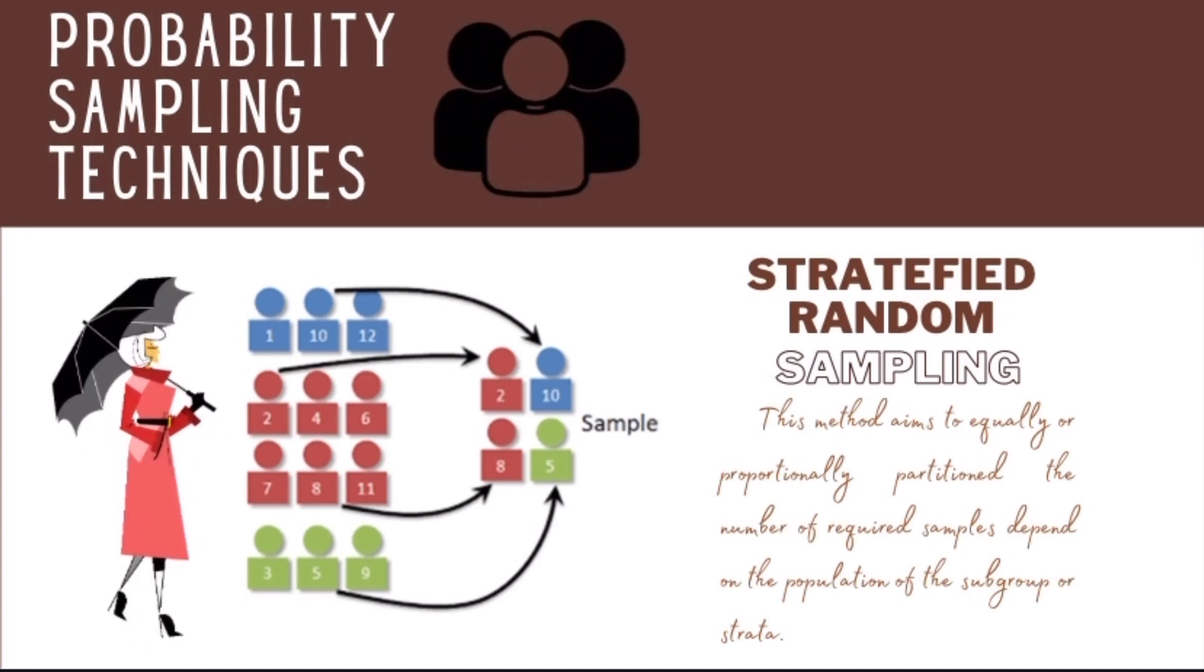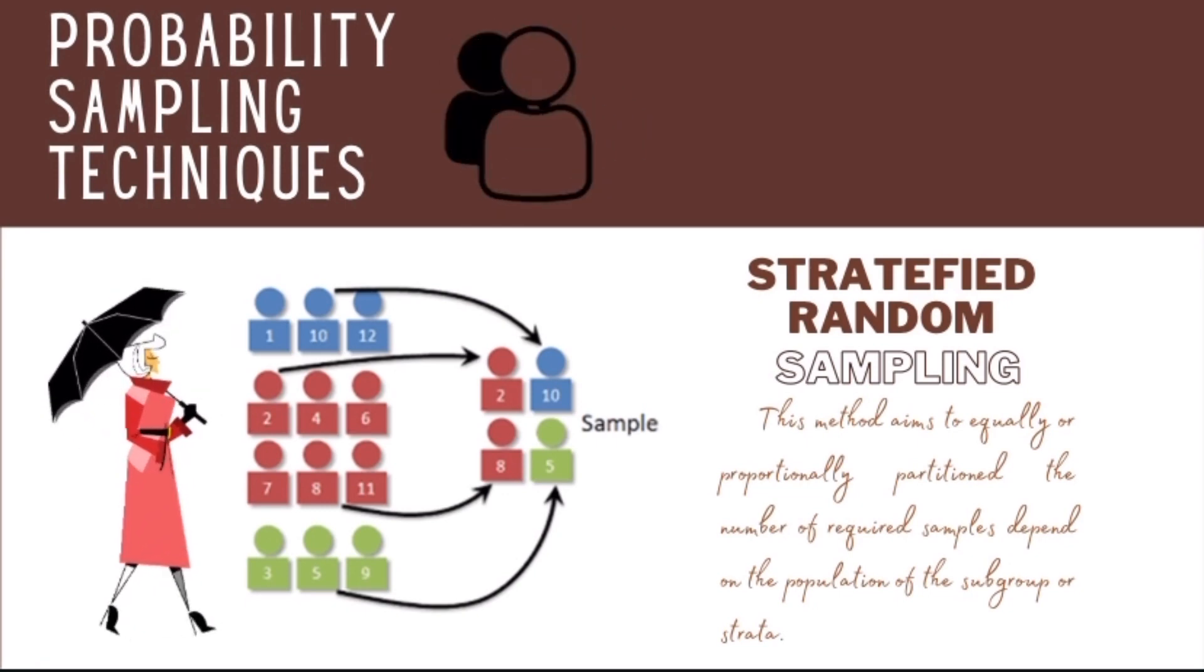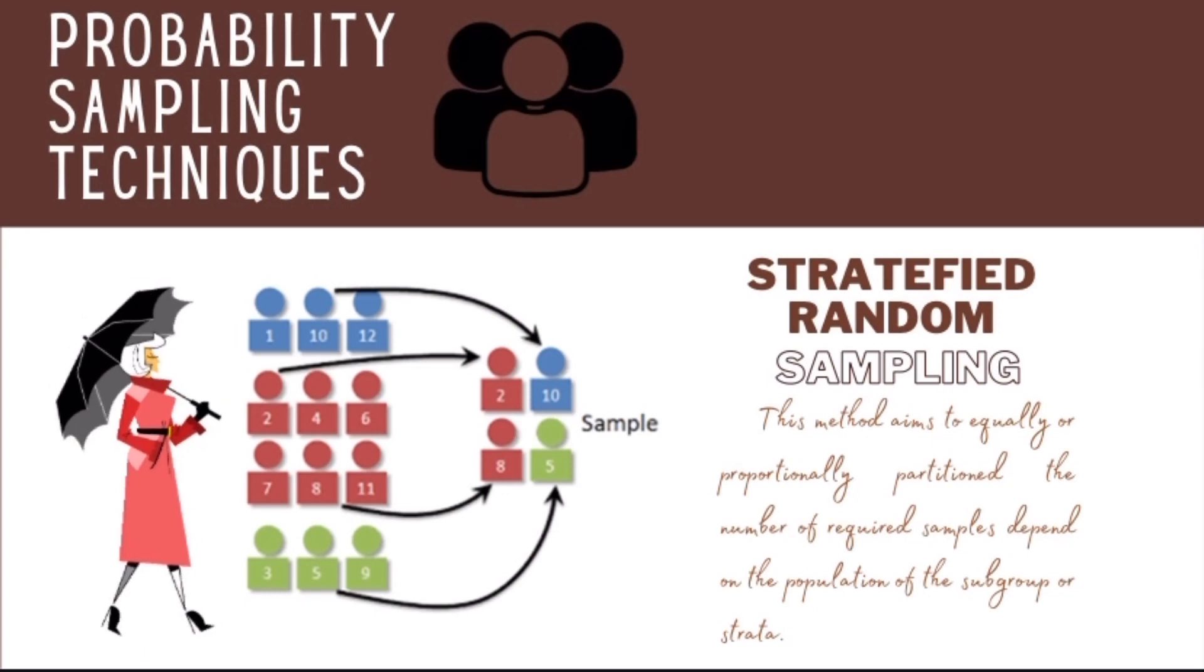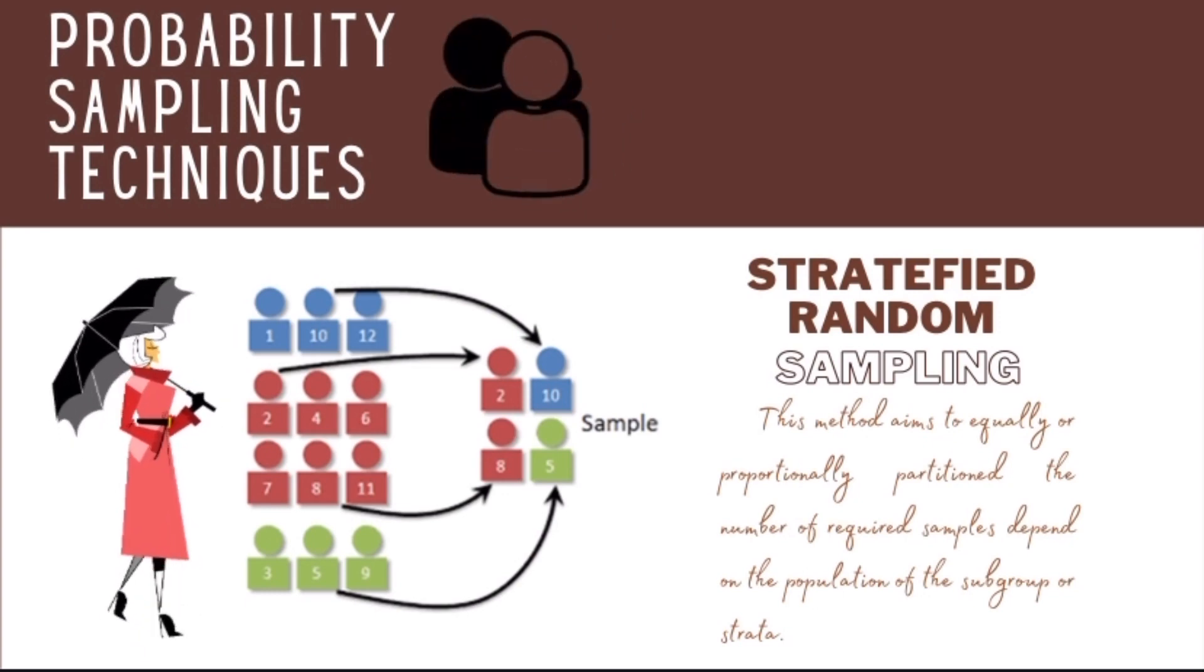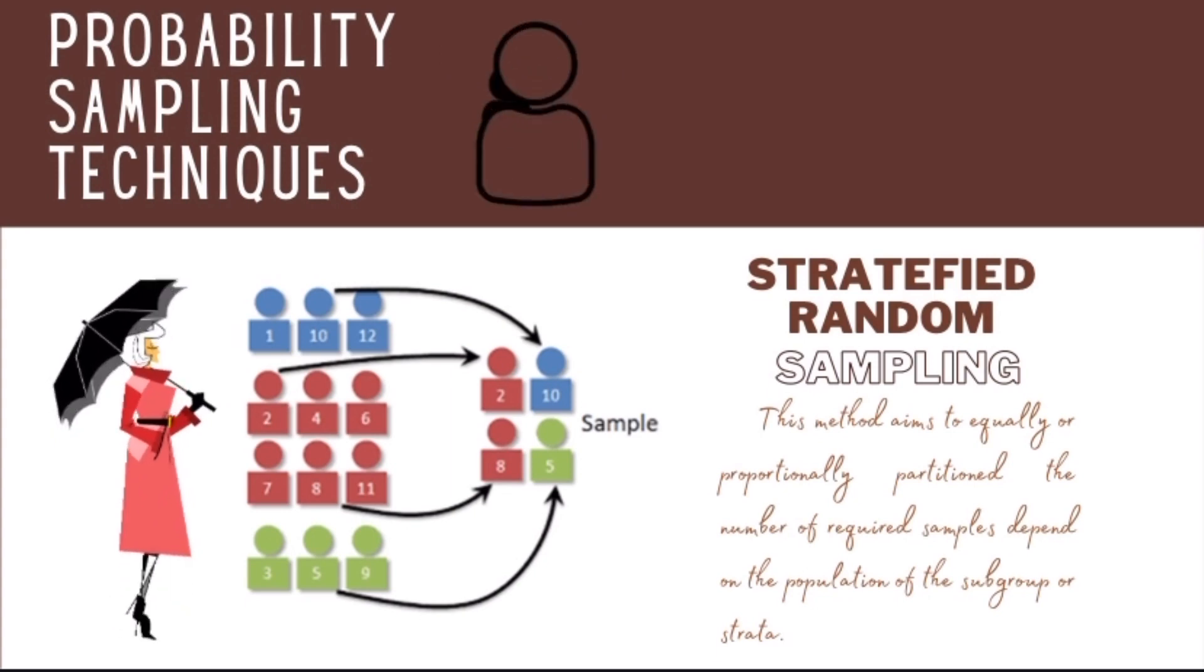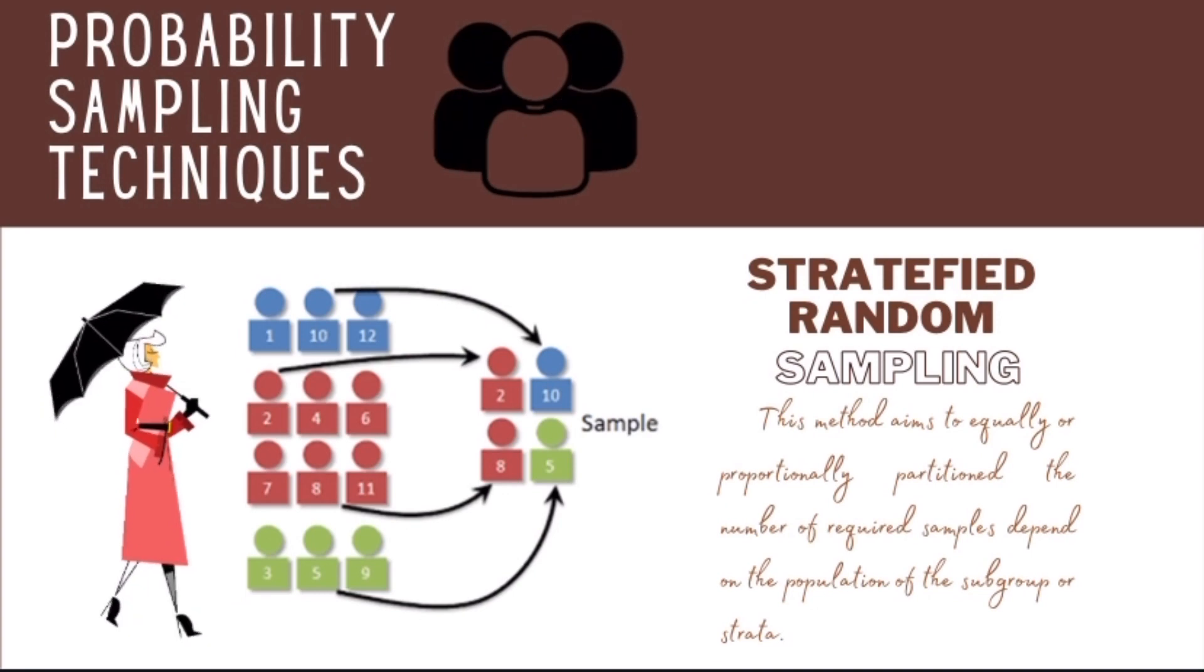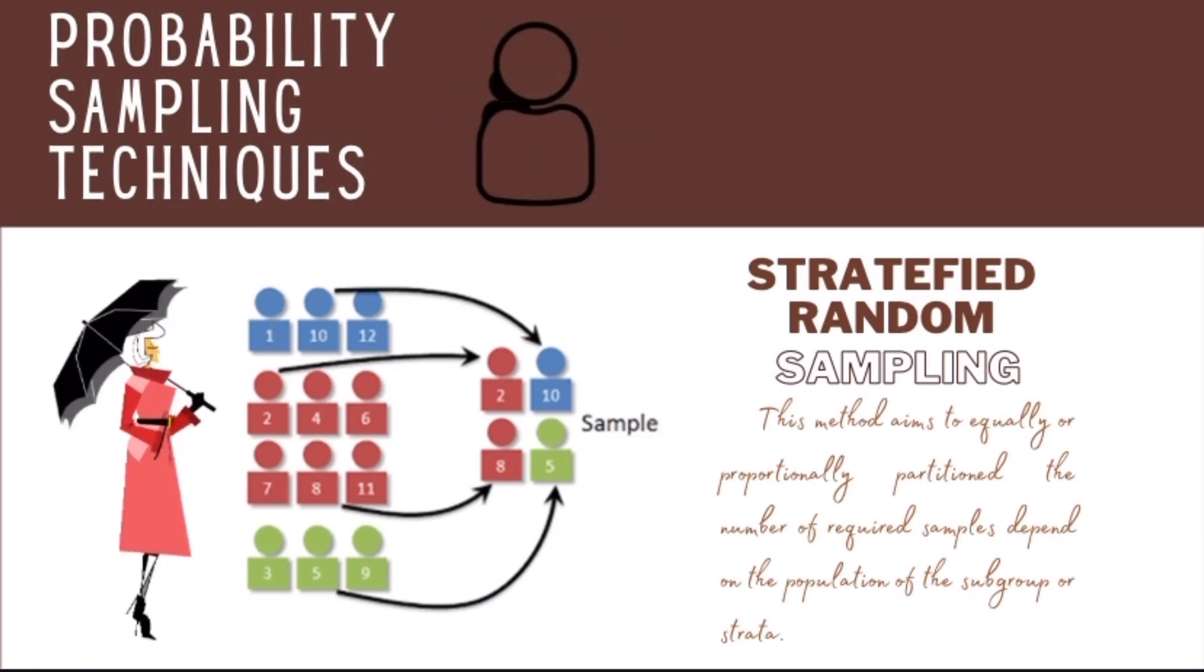Stratum size in blue, we have 3. In red, we have 6. And green, we have 3. We have 3 divided by 12 multiplied by 4, so we will have 1. Here as you can see, from blue we have one sample. From the group or strata in red, we have 2. And then sa green, we have 1.